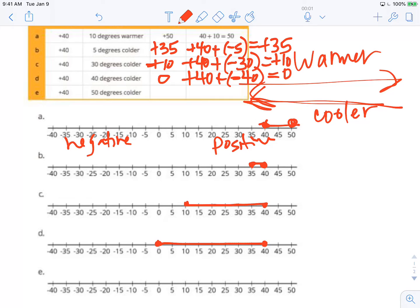And then on that last one letter E we're going to start at positive 40 but this time we're going to get 50 degrees colder. So we're going to go all the way back to 0 for 40 plus 10 more. And that will end us at negative 10 degrees. So we'll write that as positive 40 plus a drop of 50 degrees. So we write that as negative 50 leaves us at negative 10 degrees.